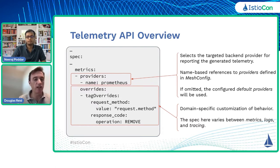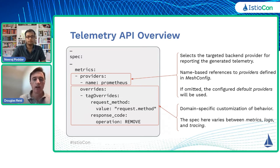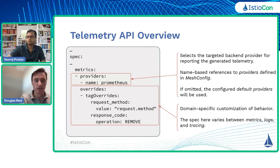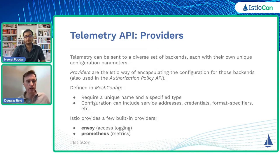Continuing the example, we also say we want to turn on metrics and select a provider named Prometheus. The provider reference is by name — these are named providers defined in mesh config. You don't have to define them if you've already set up default providers. Then there is domain-specific configuration: here we're saying for all the metrics we generate, add a new label 'request_method' taken from the request, and remove the response code because we don't care about error codes in this example.